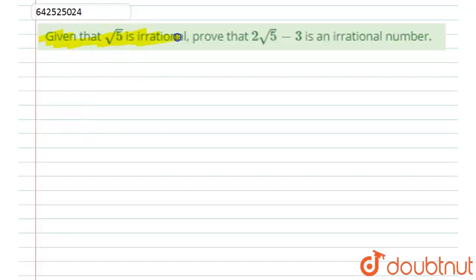Here we have given that √5 is irrational. Prove that 2√5 - 3 is an irrational number.